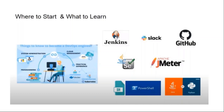All three areas — Jenkins with JMeter, AppDynamics, Telegraf and InfluxDB, and Selenium for client-side performance — are required from an automated performance perspective. We'll also cover GitHub and Slack integration. GitHub will serve as the source repository from which Jenkins picks the latest scripts — team members check in JMeter scripts, and Jenkins takes the latest version for execution.